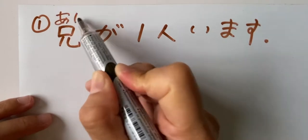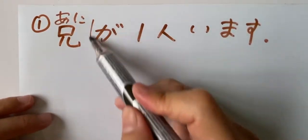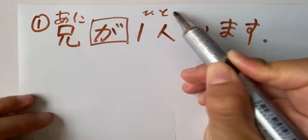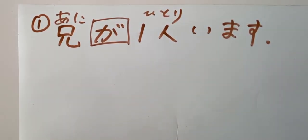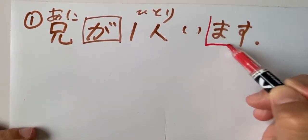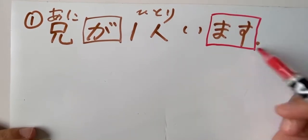Just now we learned ani. Particle is ga. Ne. Ga. This is hitori. Hitori. Hitori. Imasu. Yeah, remember, a verb plus masu, change to the polite form.